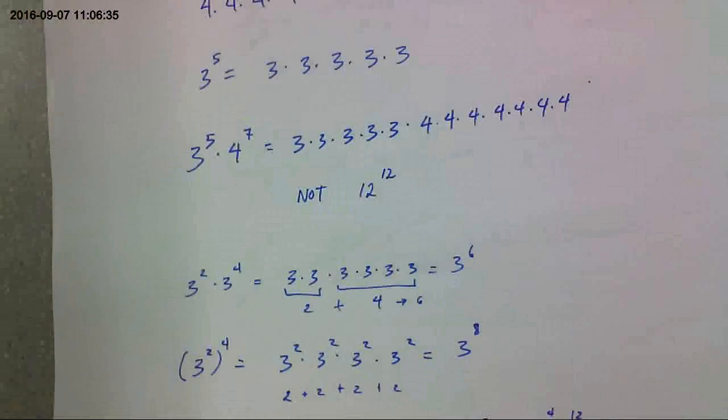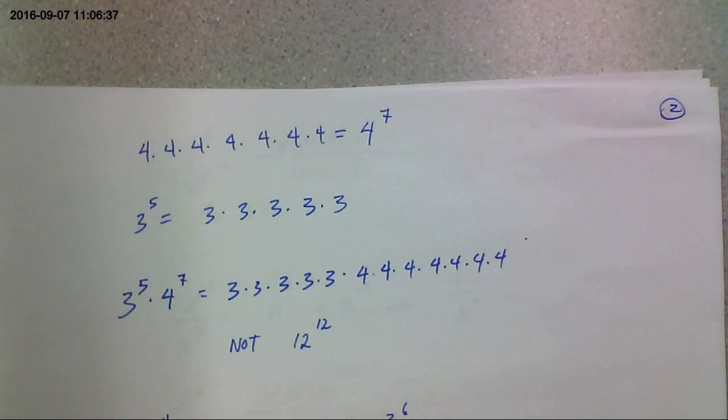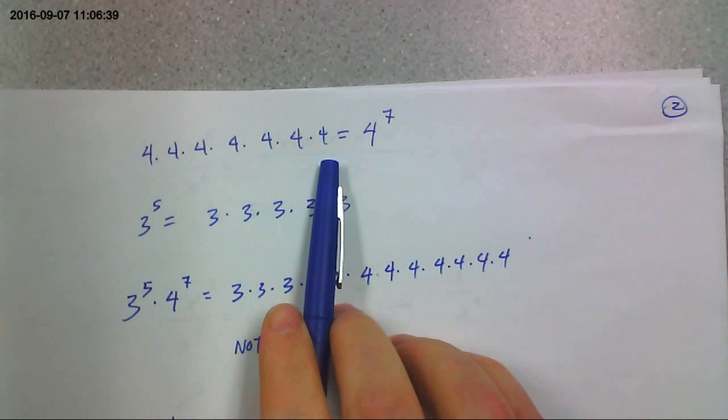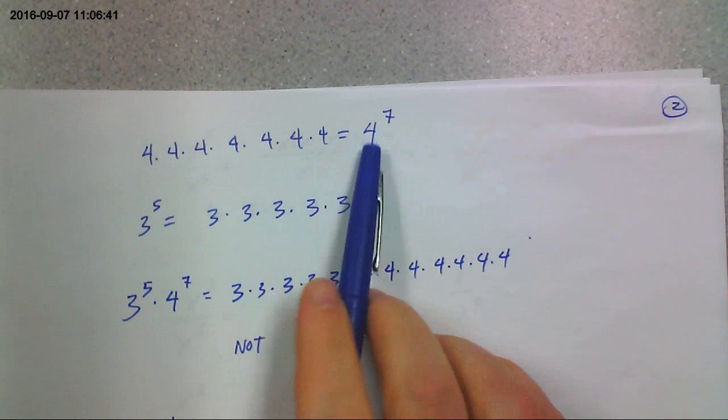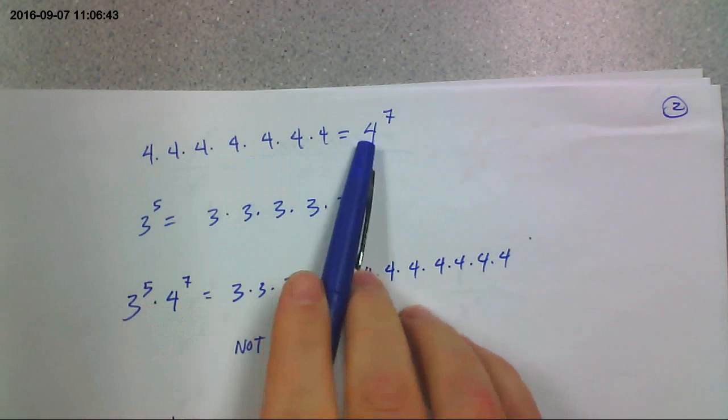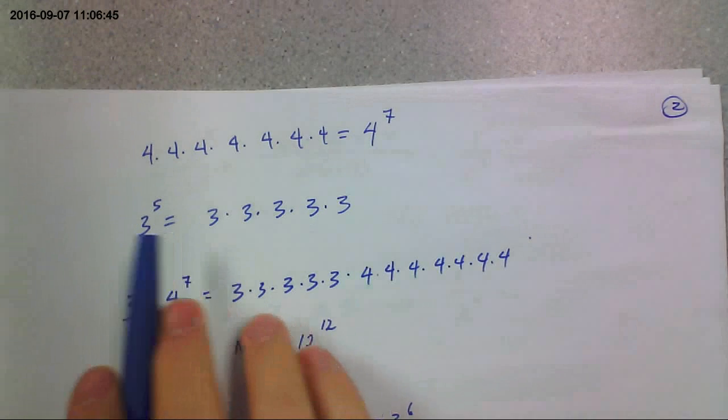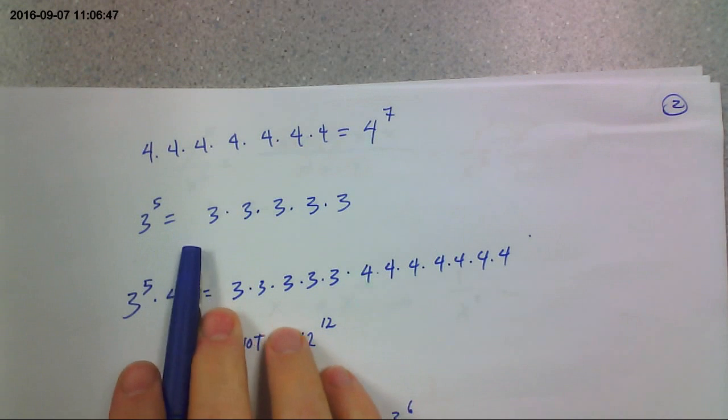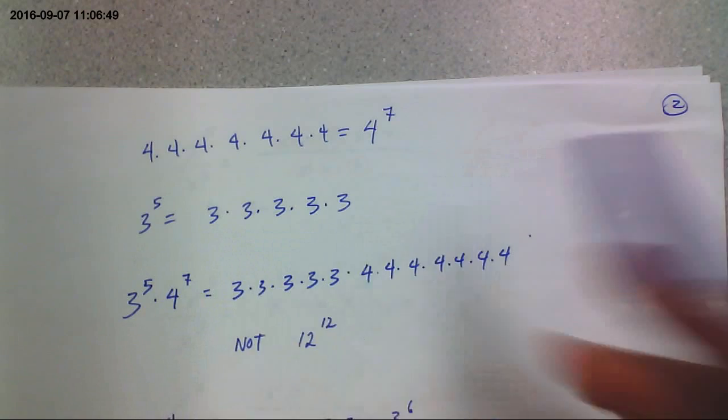Next up, repeated multiplication. So if you see something like this and it asks you to rewrite it as an exponent, that's just 4 to the 7th. You just count them up. There's 7 of them, just like that. If you're asked to expand 3 to the 5th without multiplying it out, you would just write out 5 of them.